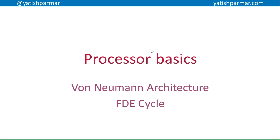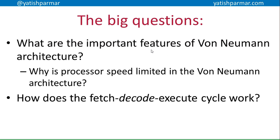So, processor basics. I'm talking about Von Neumann architecture and the fetch, decode, and execute cycle. Big questions: what are the important features of Von Neumann architecture, and if you understand what it's about, why is the processor speed limited according to this technique? Also, how does the fetch, decode, execute cycle work?